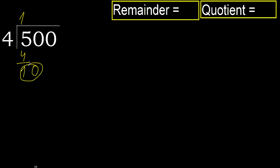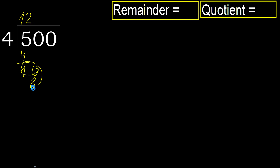10. 4 multiply by 3 is 12, is greater. Multiply by 2 is 8, is not greater. Subtract.